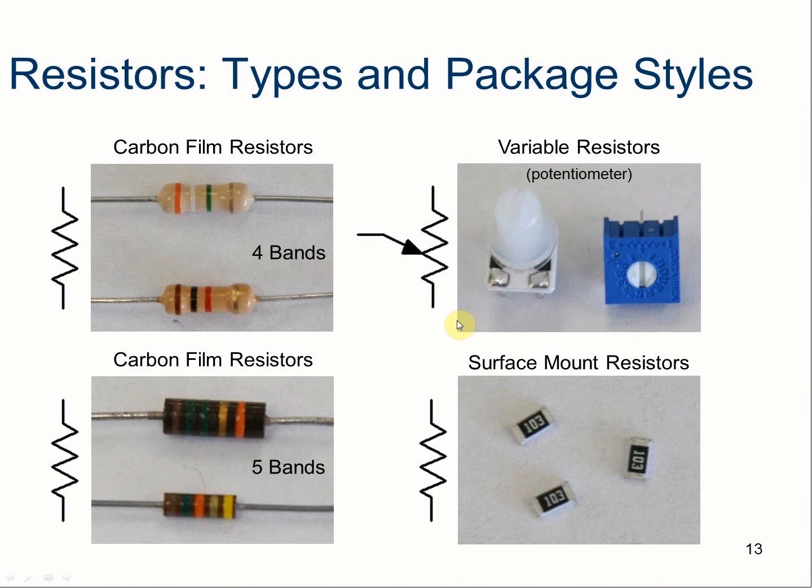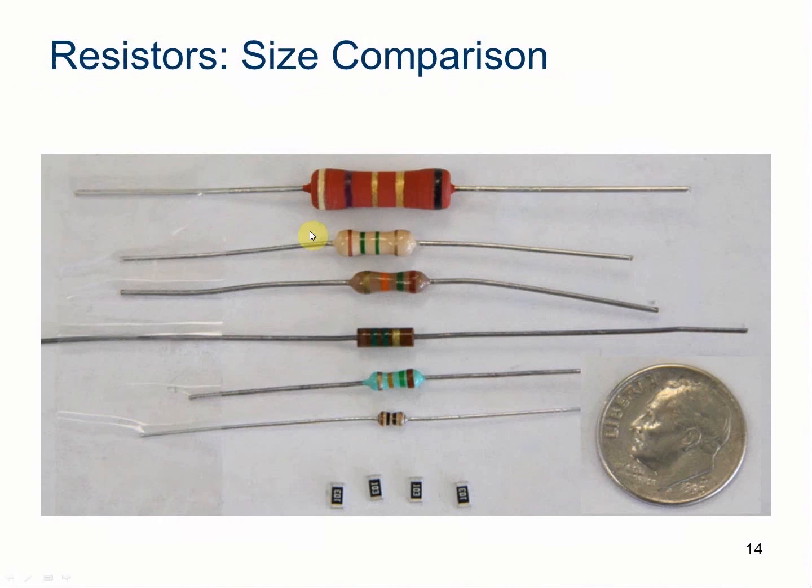So here, on this page, you can see we have several different types of resistors. The variable resistor is often an interesting choice. Basically, it's called a potentiometer also. When you turn the volume up and down on a component, you're probably adjusting a variable resistor or potentiometer. This shows the different sizes of resistors in comparison to a dime.